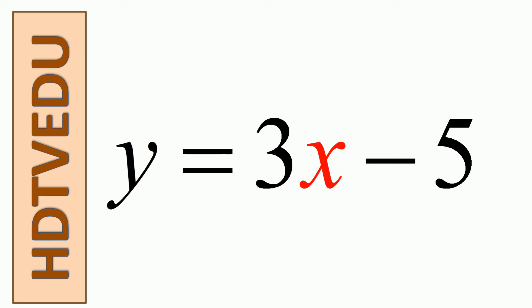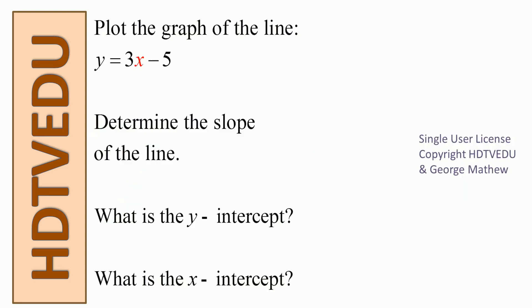y is equal to 3x minus 5. Plot the graph of the line y is equal to 3x minus 5, determine the slope, what is the y-intercept, and what is the x-intercept.